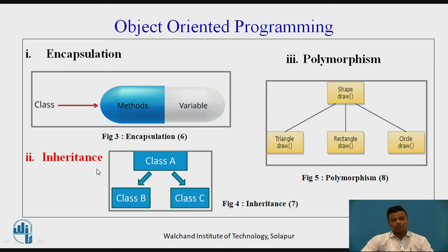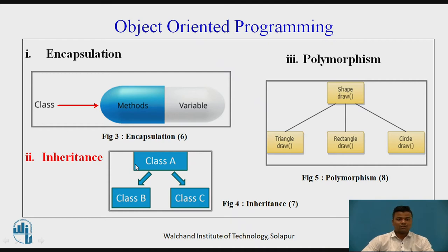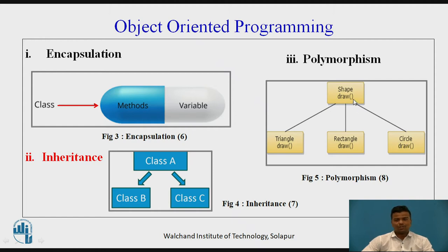Encapsulation means wrapping up different types of entities together in a single unit. Inheritance can interchange different properties from one class to another class. A function like a draw function can consist of different functions — for example, suppose you want to draw a triangle, rectangle, and circle, all within the single function called draw.